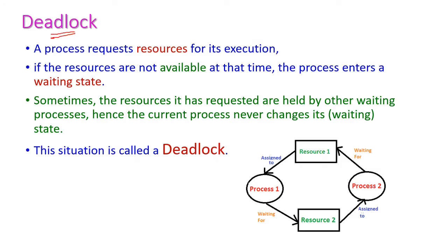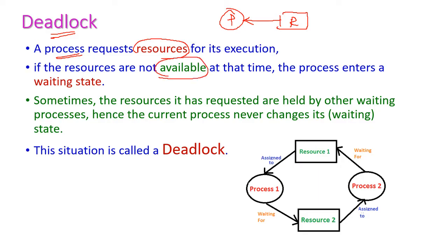What is deadlock? For executing any process, it requires resources. A resource should be assigned to the process — then only the process will be executed. If the resource is not currently available, then this particular process will enter into a waiting state. Sometimes the resource it has requested is held by other waiting processes.